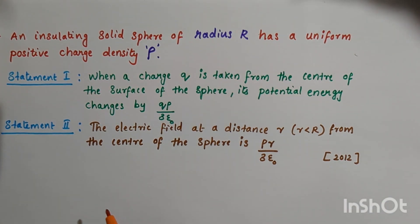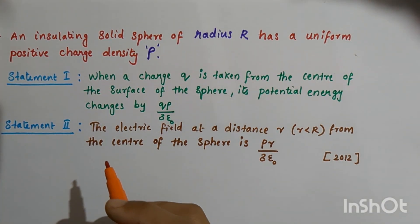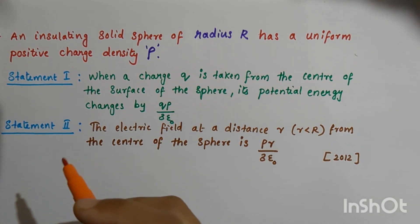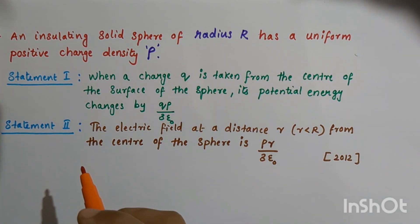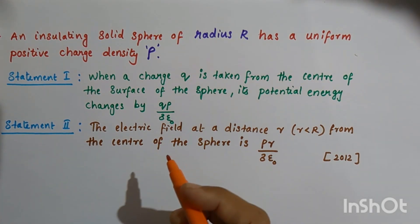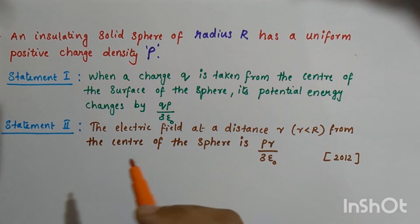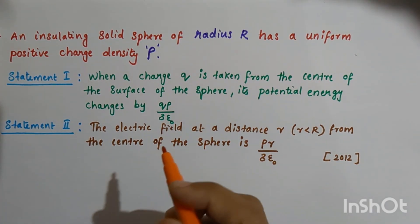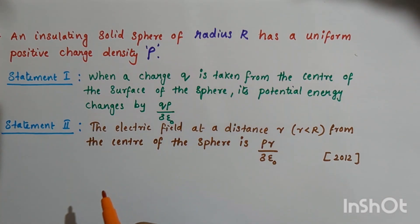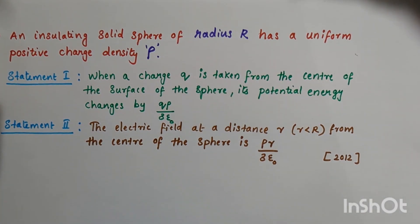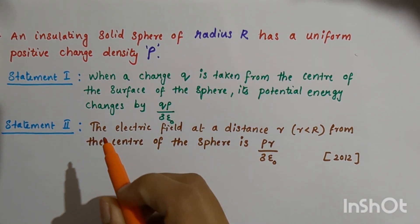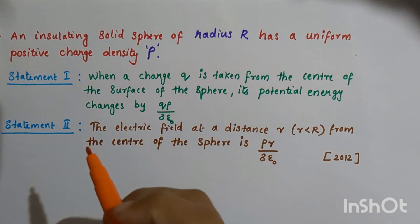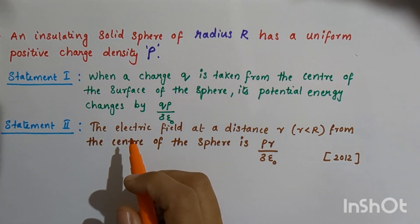The options are: Statement 1 is true and Statement 2 is false; Statement 2 is true and Statement 1 is false; or both statements 1 and 2 are correct. Let us see whether Statement 1 is a correct or an incorrect statement.